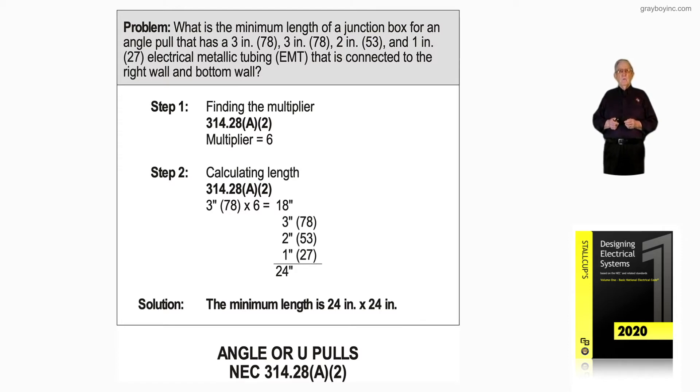Step 2, we take the 3-inch times 6 which equals 18 inches. Now, plus the 3-inch, the 2-inch, and the 1-inch, we'd have 24 by 24. So, you would have a width of 24, and then horizontally you would have a length vertically of 24. So, it's 24 by 24.